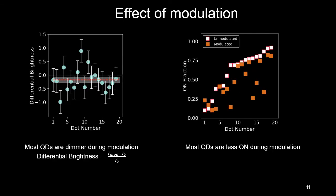We can actually be more quantitative about this and look at the changes in brightness when the dot is on and how much the dot is on. On the left I'm showing you what I've called the differential brightness, which is the modulated intensity minus the unmodulated intensity all divided by the unmodulated intensity. What we see is that indeed the PL is dimmer during modulation.